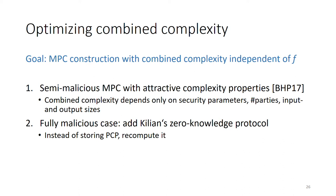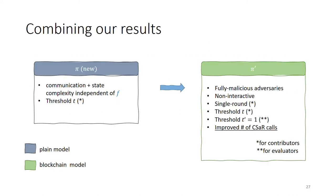Here, minor tweaks are needed in order to ensure that the combined complexity of the resulting protocol still satisfies our requirements. Specifically, in Kilian's construction the PCP is used across multiple rounds and so typically it would be stored as part of the state. However, we can easily remove this requirement by simply recomputing the PCP whenever it is needed. Building on this new protocol as well as our main result, we achieve a protocol in the blockchain model which is secure against fully malicious adversaries, does not require interaction between the MPC participants, is single-round for parties who supply inputs but are not interested in the output, and whose number of CSAR requests is independent of the function f being computed.